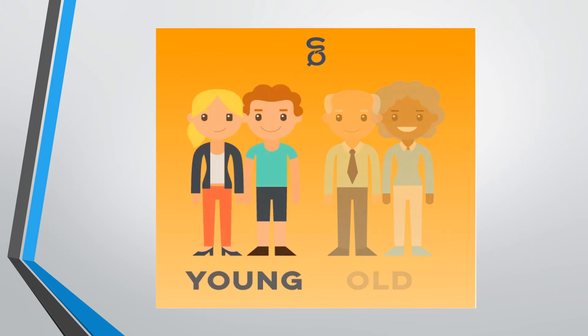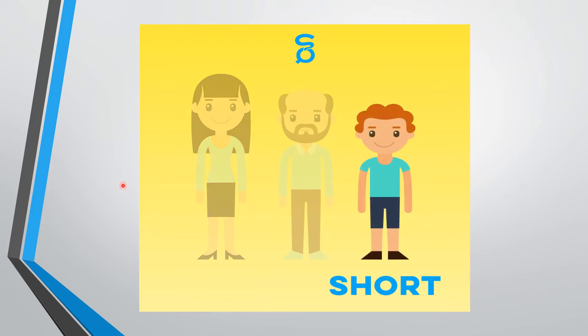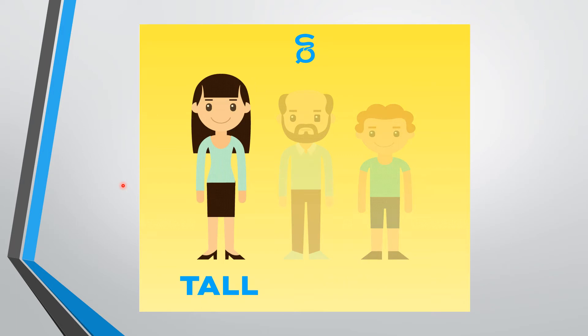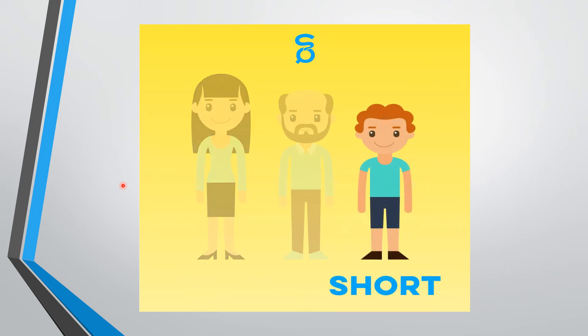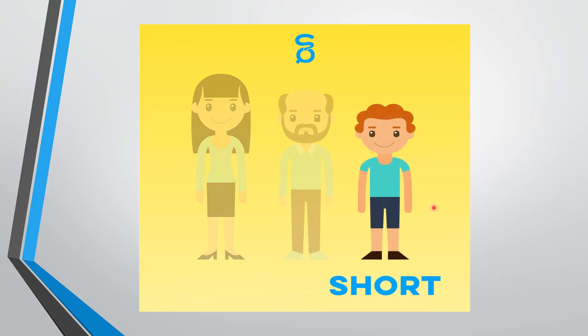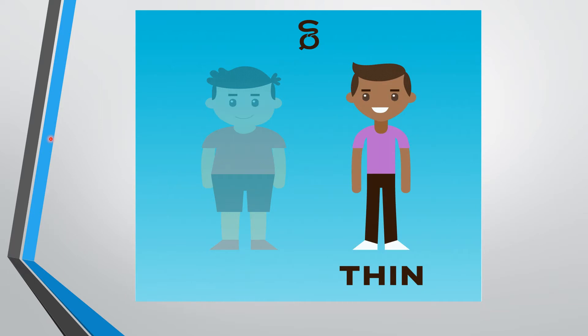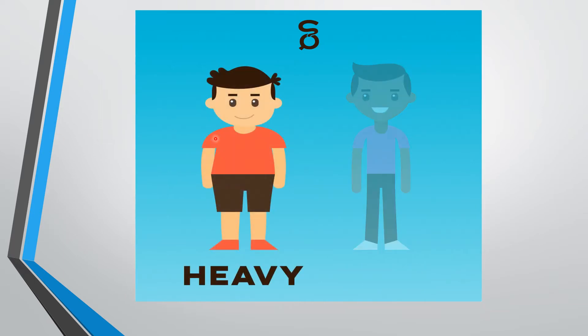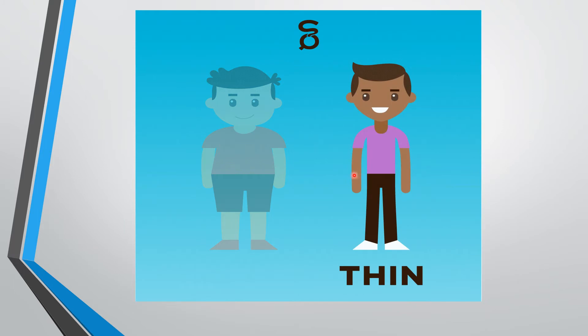What do we see here? We can see a young girl and a young boy, followed by two old people. Let's look at the second slide — what do we see here? A tall girl and a short boy. Let's move on to the third slide. Here we see a heavy boy and a thin boy.